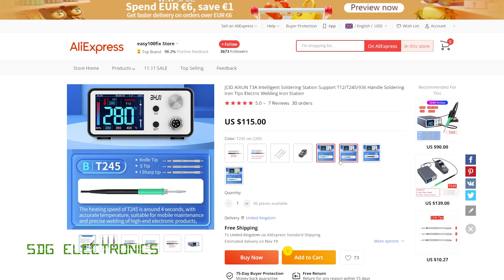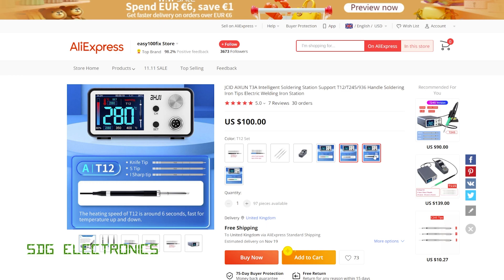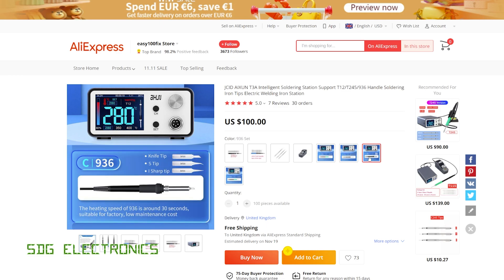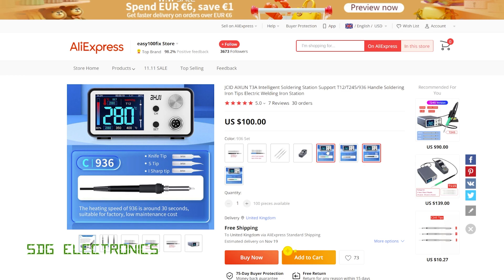If you were thinking about buying one of these systems, personally, I would avoid the T12 and the 936 handpieces because as we found, all of the high performance from JBC soldering stations seems to come from the cartridges. Even though this is a different system, we seem to be getting the same high performance as a genuine JBC station. So I think this is the setup to get.